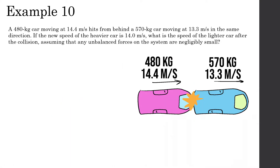Example number 10: A 480 kilogram car moving at 14.4 meters per second hits from behind a 570 kilogram car moving at 13.3 meters per second in the same direction. If the new speed of the heavier car is 14 meters per second, what is the speed of the lighter car after the collision, assuming that any unbalanced forces on the system are negligible?